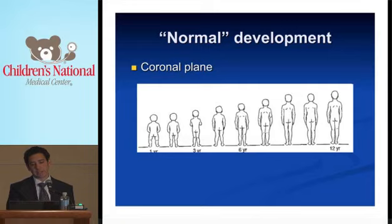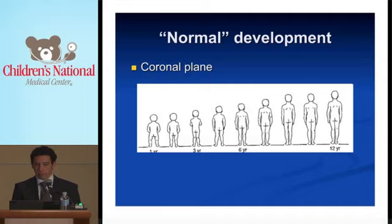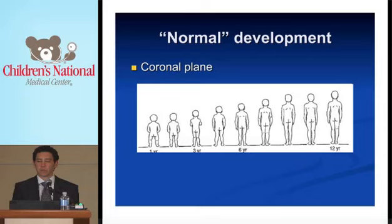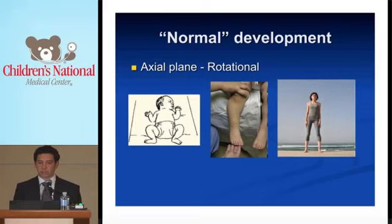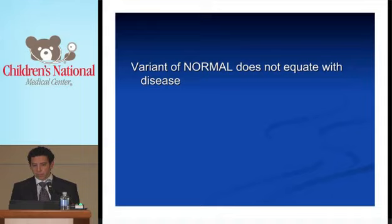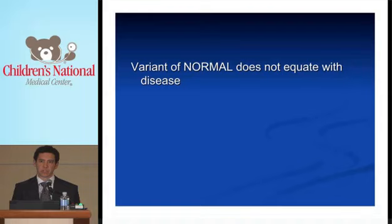Anticipated normal development in the coronal plane: when a child is first ambulatory, they are bow-legged. That tends to change to being knock-kneed, and then the adult profile is more of a neutral to slight knock-kneed appearance. In the axial plane, infants typically have external rotation through their hips, so you expect out-toeing at that point. That tends to resolve, and by the time they're ambulatory, the typical profile is slightly in-toed, developing to feet facing forward to slightly externally rotated. There is huge variation in all of this, and a variant of normal doesn't equate with disease. This is very challenging to explain to parents.